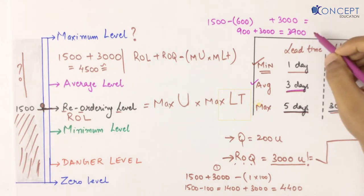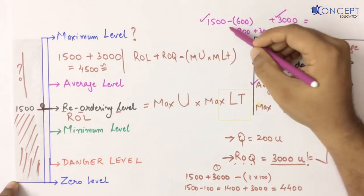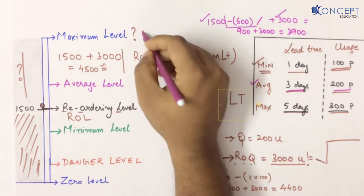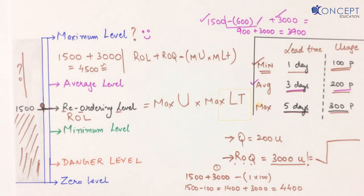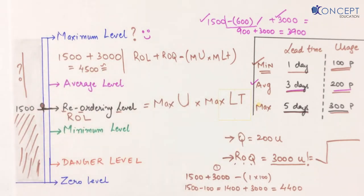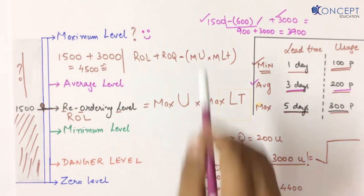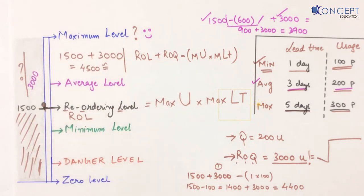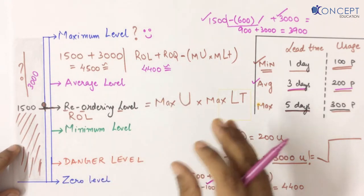What is my maximum possible quantity? My ROL is 1500, my ROQ is 3000. When the order arrives under minimum conditions, I can reach my maximum level. The maximum level is only a hypothetical point. When will my stock show maximum? Only when 3000 units arrive and minimum usage occurred during lead time. That clearly reflects: minimum usage into minimum lead time gives us the correct maximum level, which is 4400.